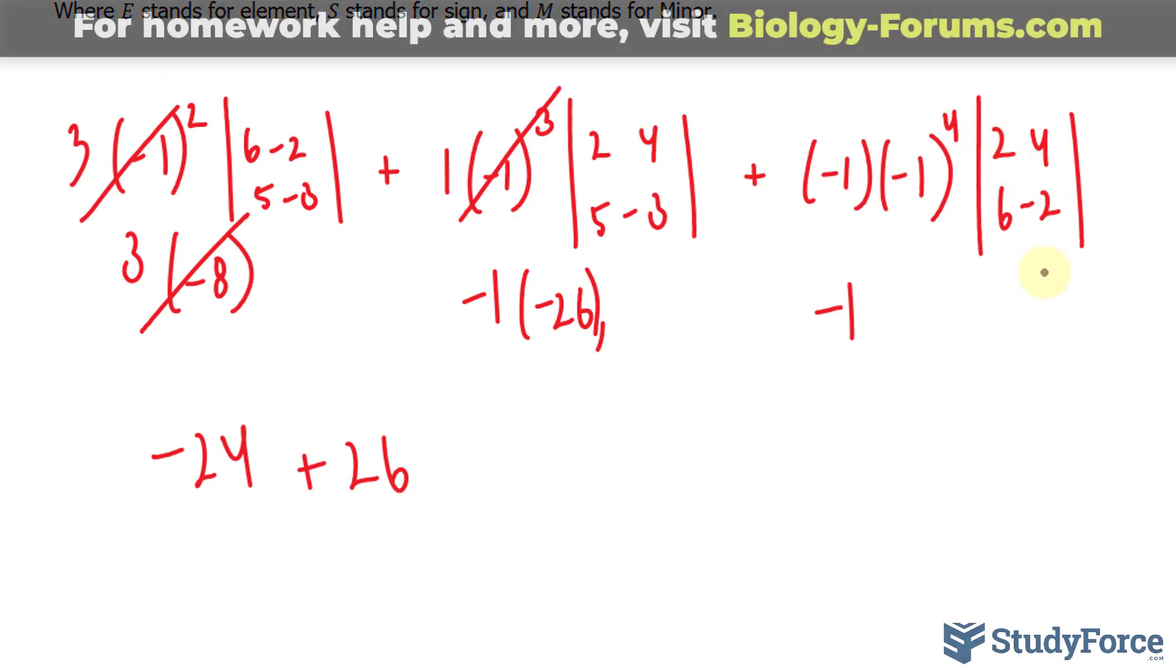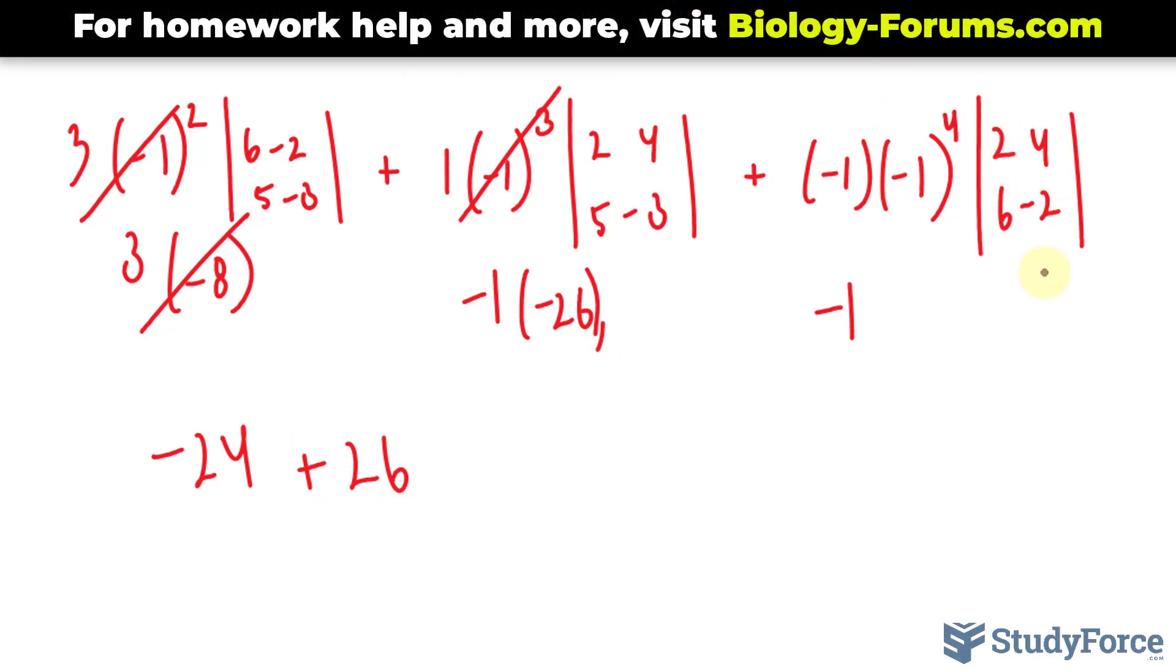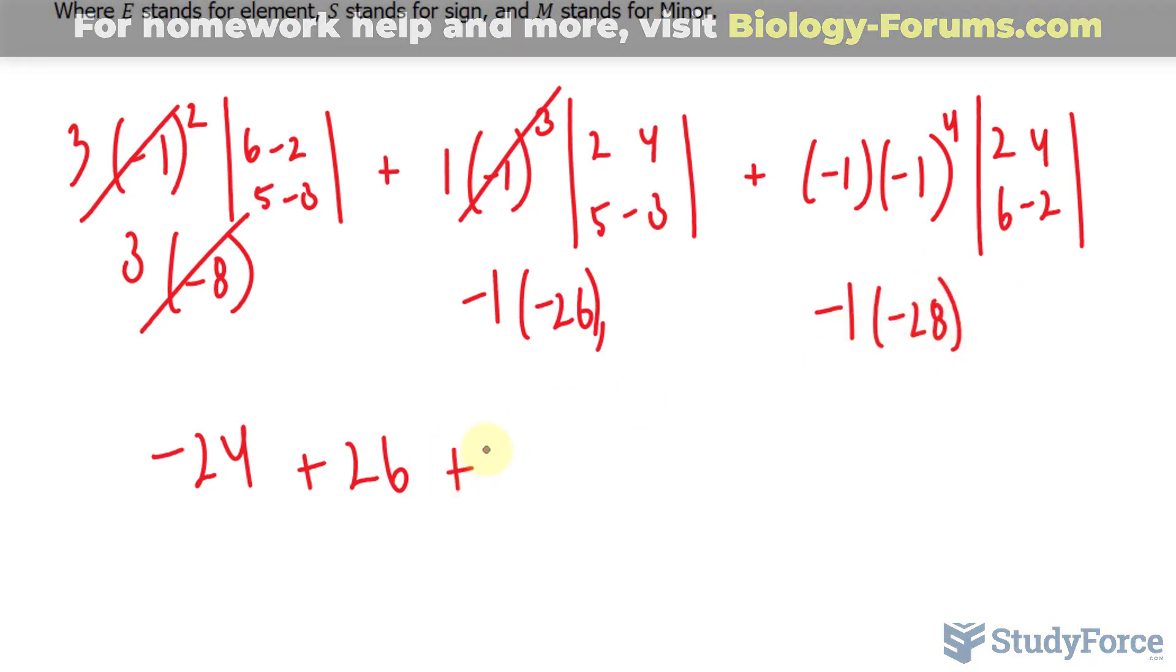And over here, 2 times negative 2 is negative 4. Minus 24, that's negative 28. Multiplying these, we end up with positive 28.